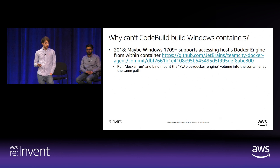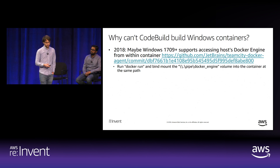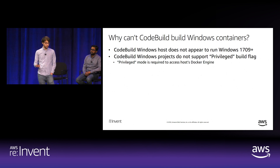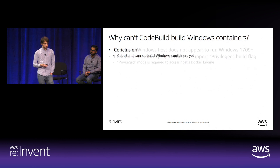In 2018, there was a brief glimmer of hope: users found that later versions of Windows may allow a container to access the host's Docker engine by mounting the Docker engine volume. However, this workaround doesn't work for CodeBuild—we don't know what version of Windows the host is running, and CodeBuild Windows projects do not allow enabling the privileged build flag, which is required to access the host's Docker engine.